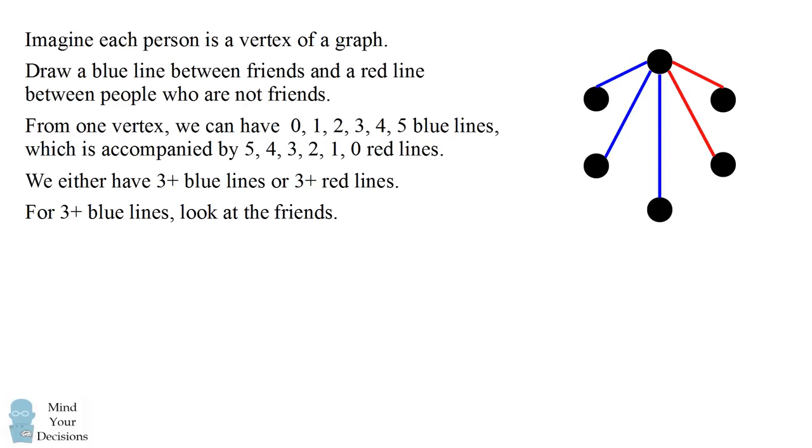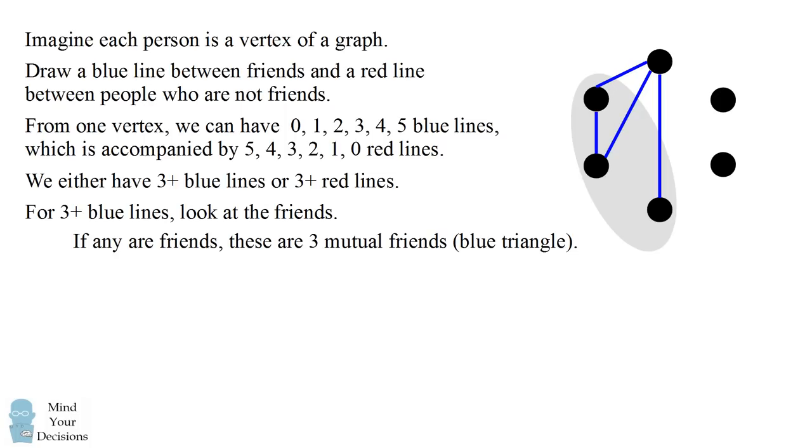Let's first consider that there are at least three blue lines. What we do now is we'll look at the vertices which are connected by blue lines—we'll look at the friends of this person. If any of these two people are friends, we will form a group of three people in which all three are mutual friends. In other words, we will graphically have a blue triangle. These are three people who are mutual friends.